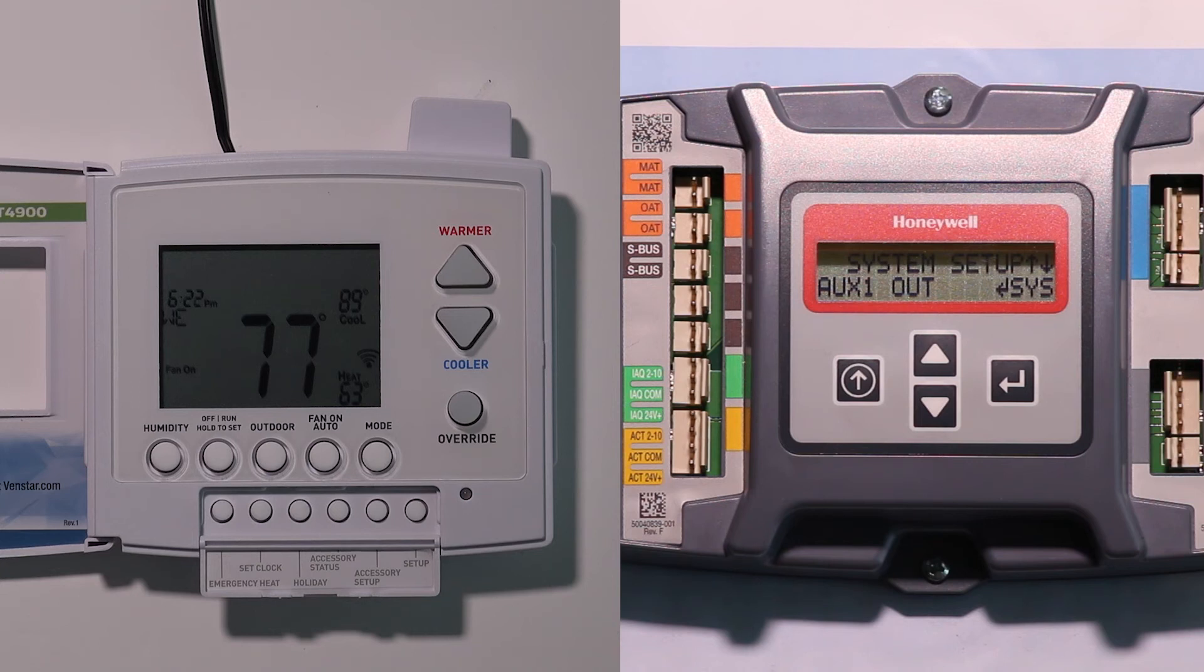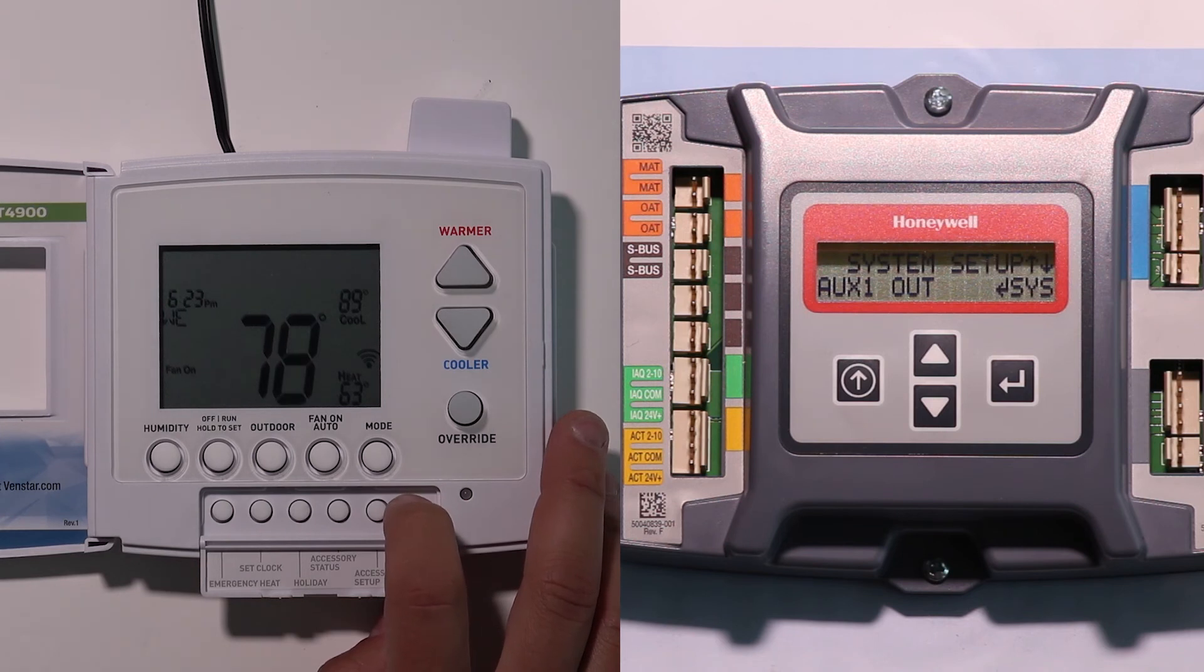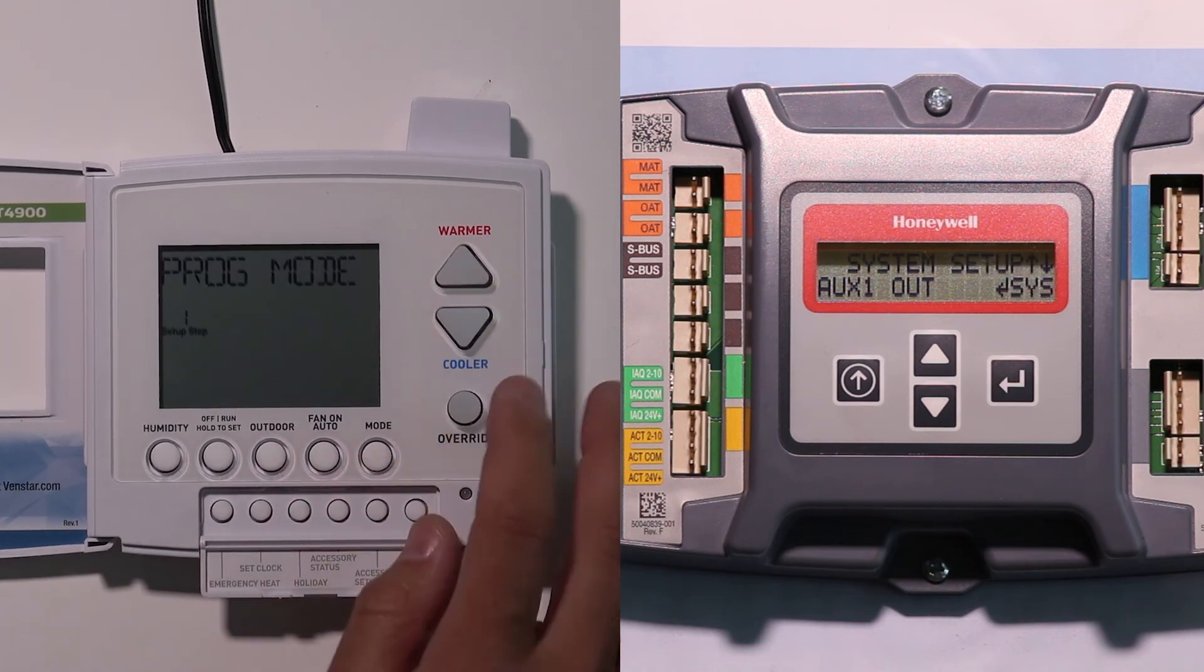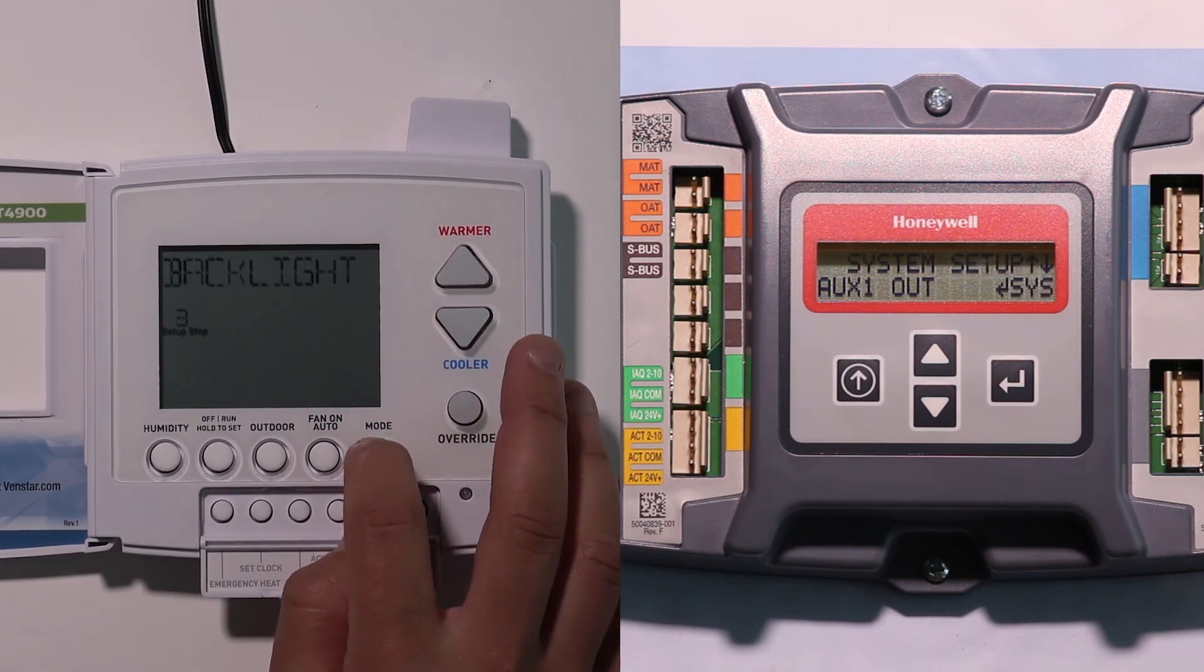Then over here on my thermostat, I need to set him up to accept that signal properly. And the reason we're setting these both up is those inputs and outputs on both the economizer and the thermostat are used for multiple features. So we basically need to tell it which feature we want to use it for. So once again, under setup, I can use my mode button to scroll through.